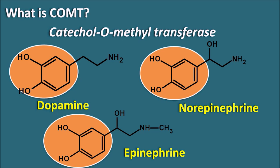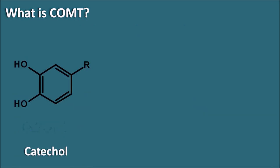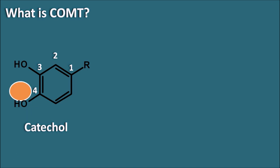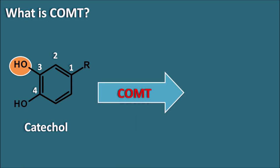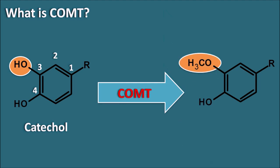COMT, catechol-O-methyltransferase enzyme, can produce the metabolism of these catecholamines. Let us indicate the catechol moiety with the side chain represented as R, and we start the numbering from the side chain: 1, 2, 3, and 4. In this catechol, the OH groups are present at the third and fourth positions. The COMT enzyme is going to attack the OH group at the third position, converting it into an OCH3 group — that is, a methoxy group.